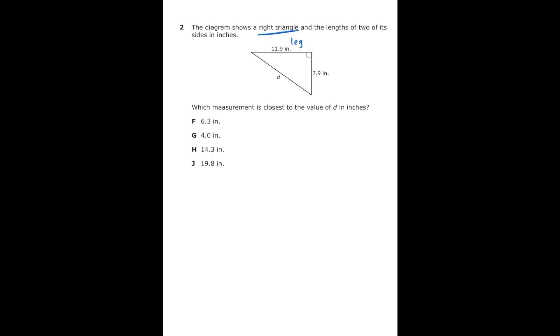So anytime we have a right triangle I know that we're going to be using Pythagorean theorem and they give us both of the legs and we're looking for the hypotenuse which means that whenever we're looking for that missing side we're going to be adding. So in my calculator I'm going to go ahead and set up my square root bar and I'm going to do 7.9 squared plus 11.9 squared and after I put that into my calculator I should get an answer of 14.3 and that is letter H.